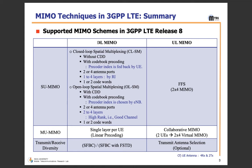Downlink means the base station is communicating with the user equipment — all signals and strategies from base station to UE are called downlink. Uplink means when the user equipment is communicating with the base station. Let me first introduce SU-MIMO, MU-MIMO, and transmit/receiver diversity.